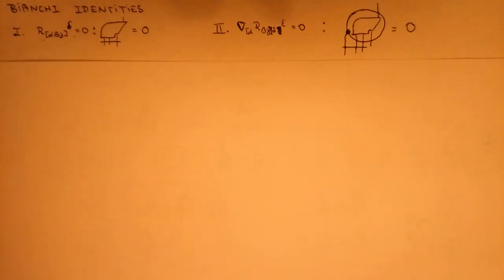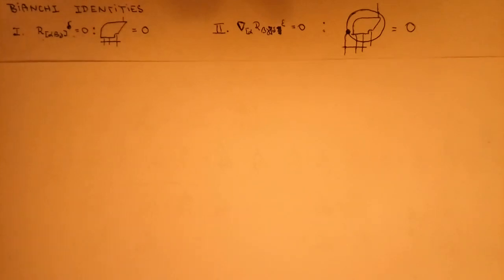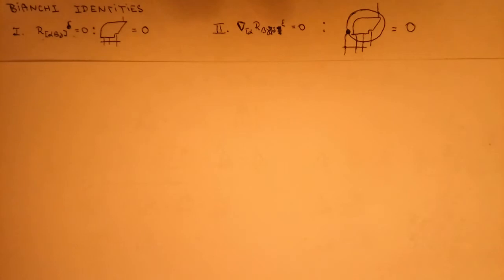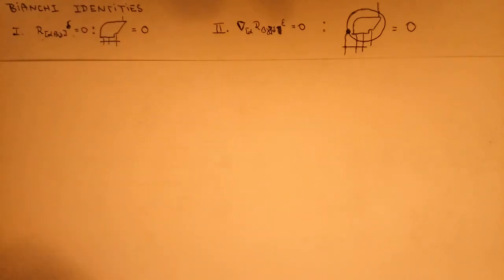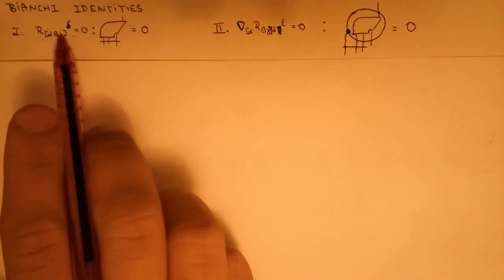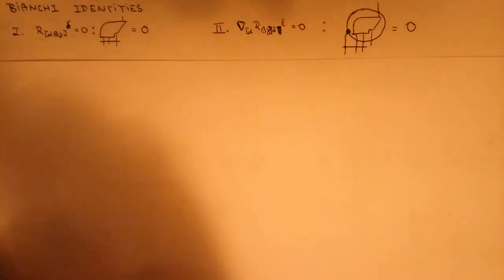Let us prove these identities using the very useful tool called graphical calculus, first devised in the book called The Road to Reality by Roger Penrose. This is the Riemann tensor in graphical notation, and these are the indices alpha, beta, gamma, and delta.